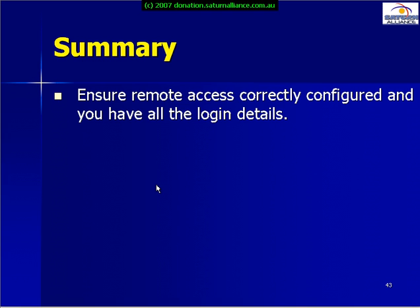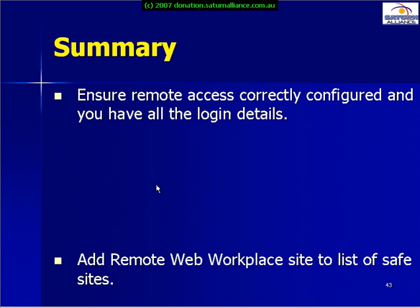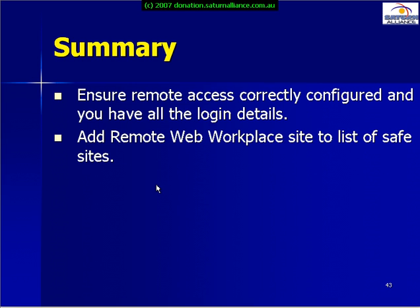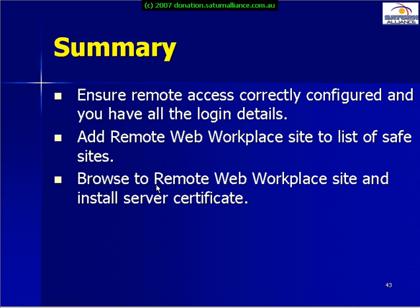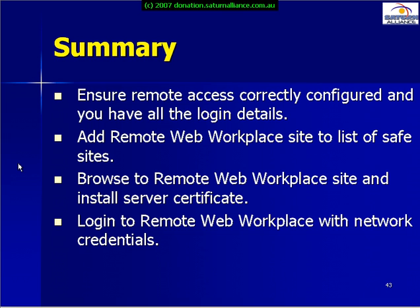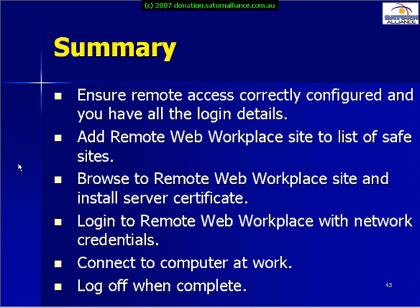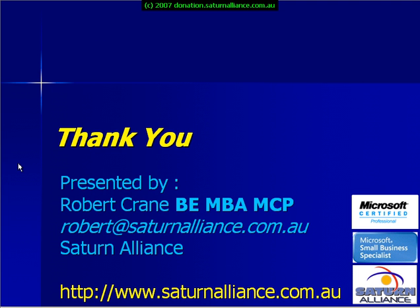In summary: ensure that your remote computer access is correctly configured and you have your login details. Add the Remote Web Workplace site to your list of safe sites. Browse to the Remote Web Workplace site and install the certificate on your machine. Log in to Remote Web Workplace with the network credentials and then connect to the computer at your office. Log off when complete. Thank you very much for viewing this presentation from Satin Alliance.